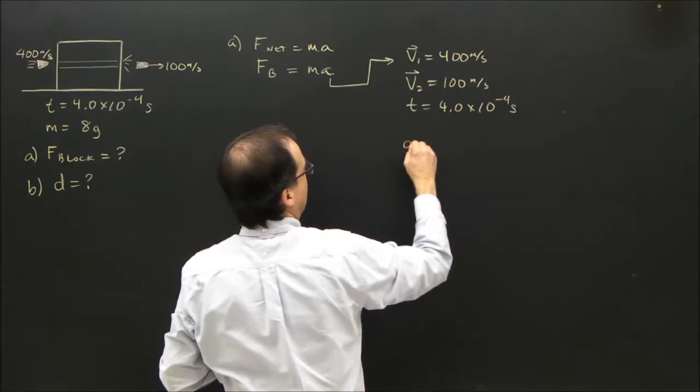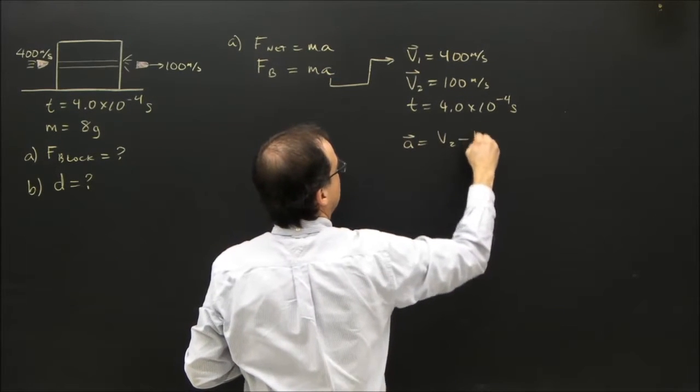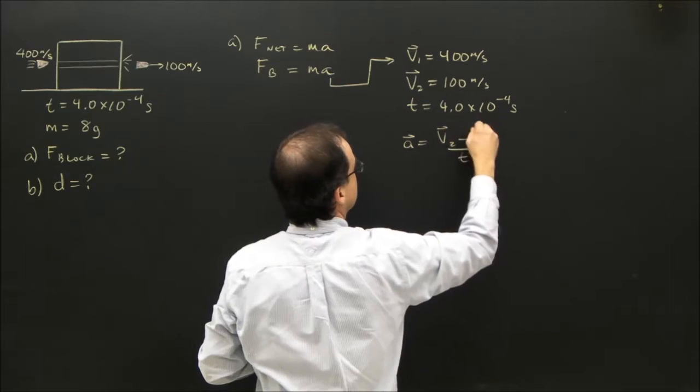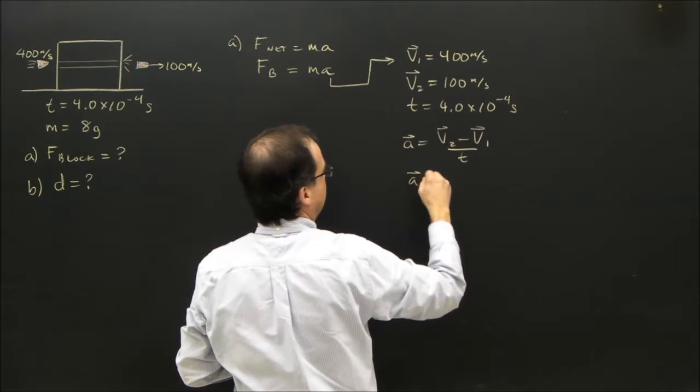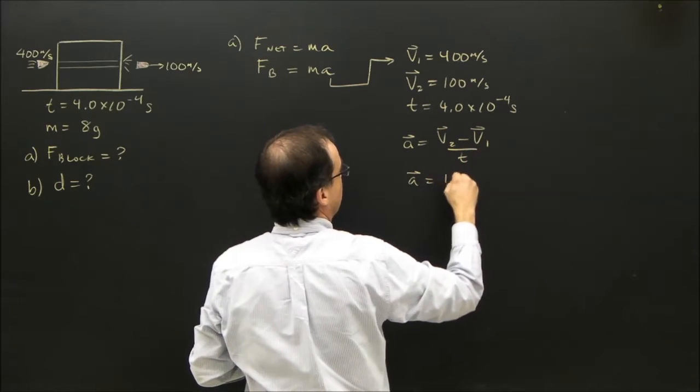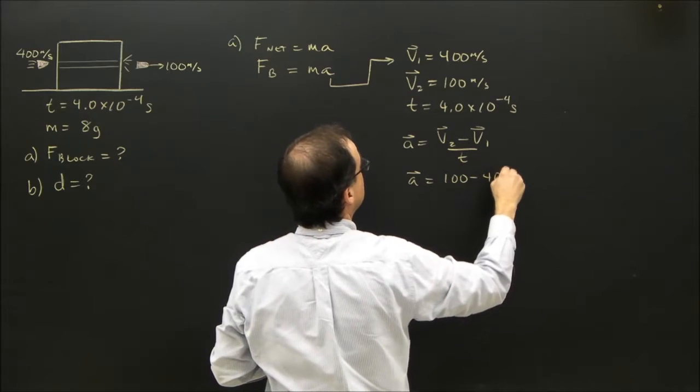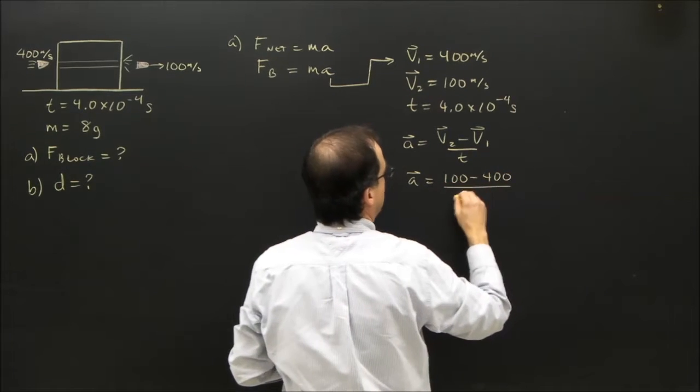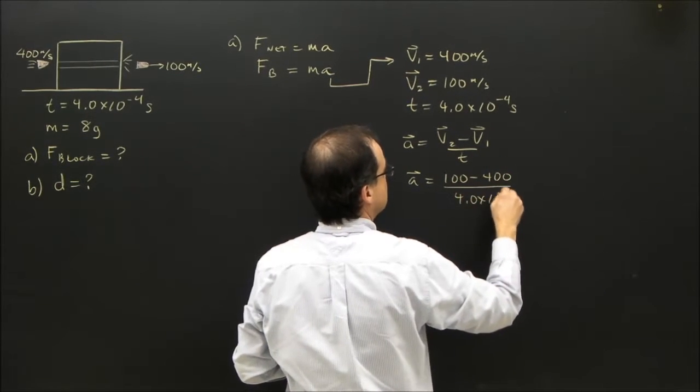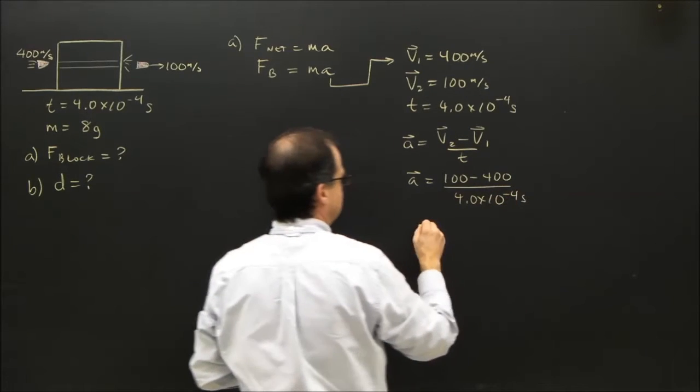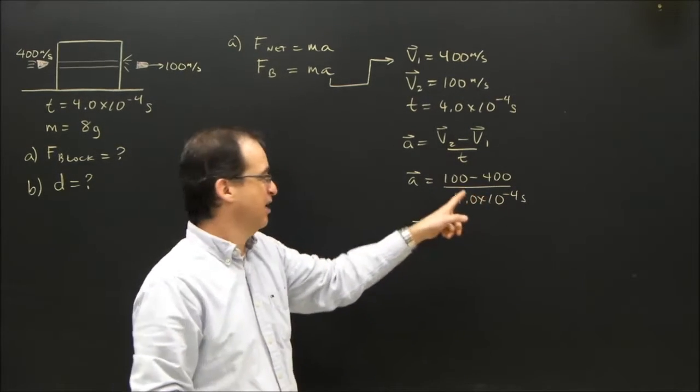So I'm going to have to find the acceleration. I'm going to use my V2 minus V1 over T. So the acceleration is 100 minus 400 divided by 4.0 times 10 to the negative 4 seconds. So the acceleration is going to be negative.